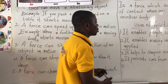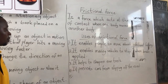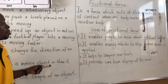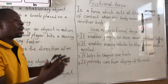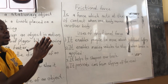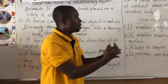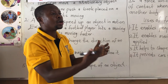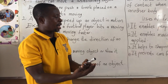Second use: it enables moving vehicles to stop when braking is applied. When the car is moving and the brake is applied, the brake makes contact with the rim of the car, and this will reduce the speed. Force can slow down or stop moving objects. When we apply this friction force via braking, it reduces the speed of the car.